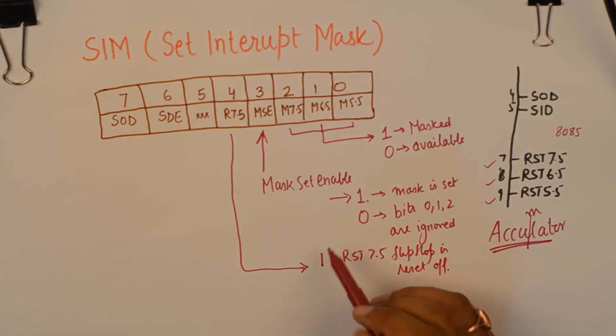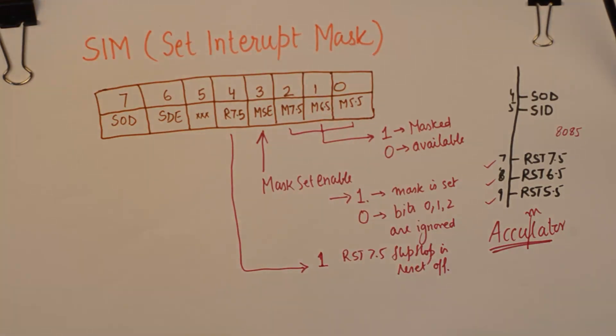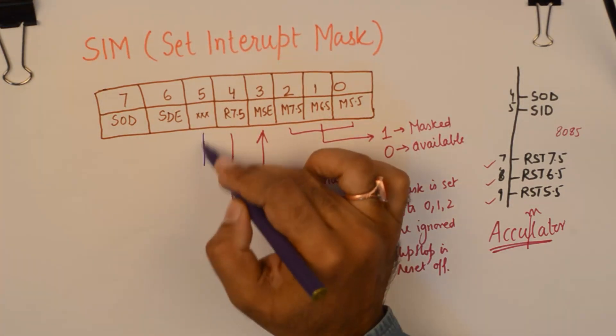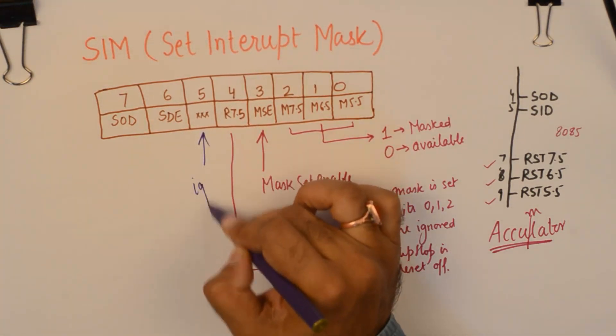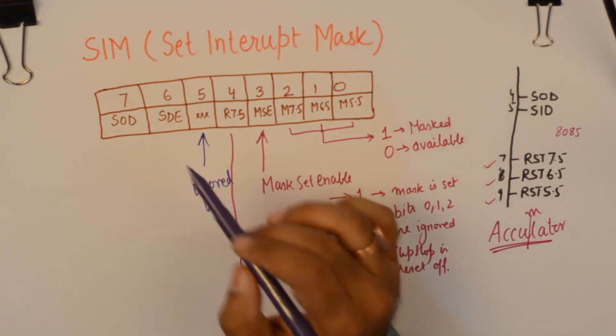The RST 7.5 flip-flop is reset off. Special ability to control RST 7.5. This bit does not mean anything.